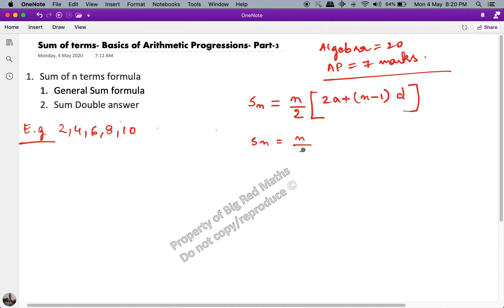If I break down the formula as Sn equals n upon 2 into a plus a plus n minus 1 into d, you will find out that this is actually the nth term or the last term.